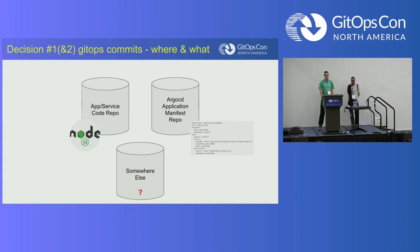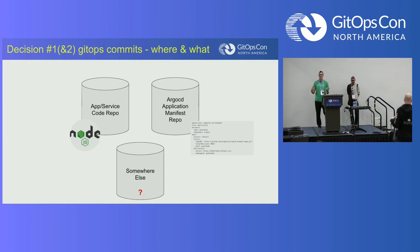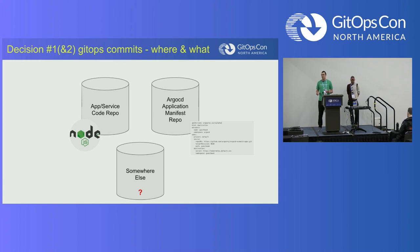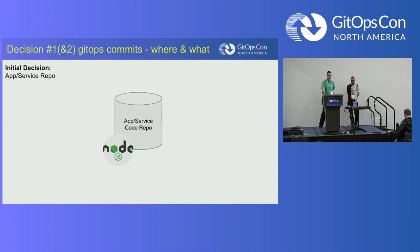Once we spun up Argo CD, we created a separate application manifest repo to store the Argo CD application manifests. We were thinking it might be a good time to centralize the Helm charts and values files out of the application repos, but we also just wanted to adopt Argo CD without boiling the ocean — make small, incremental changes. So we landed on keeping them in the app and service code repos.